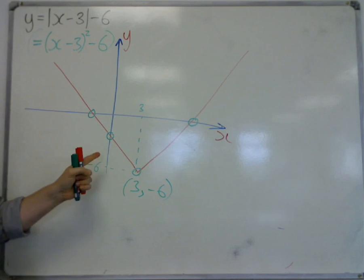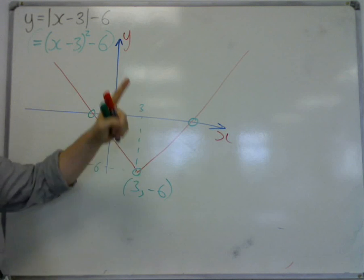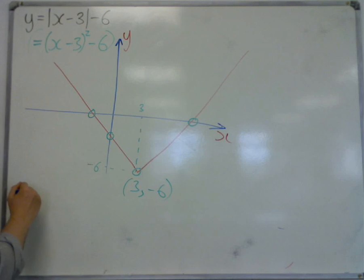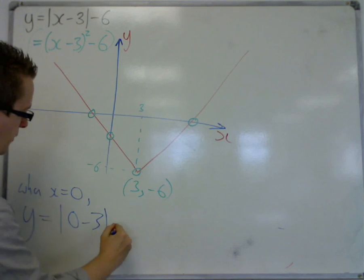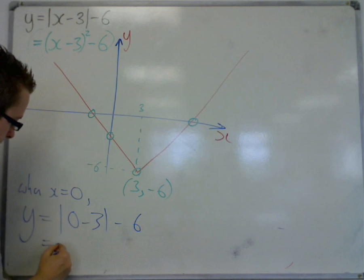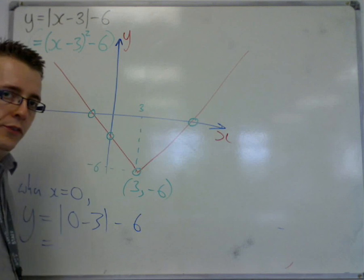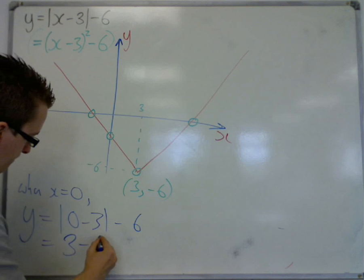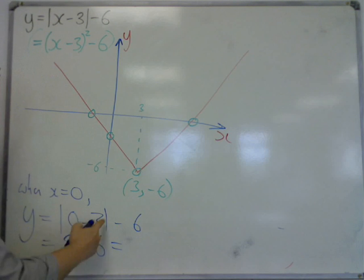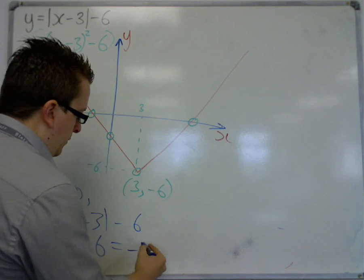We then want to find out where it crosses the y-axis. Now, that's when x is 0. So when x is 0, y is equal to |0 - 3| - 6. Now, the modulus of minus 3 is just 3. So we get 3 - 6, which is equal to minus 3.